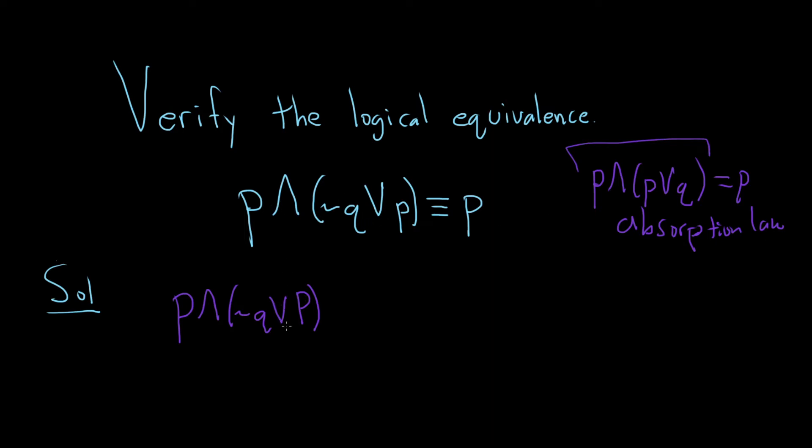So we would be there if we could just switch the P and the not Q. And we can do that using something called the commutative law. So this is P and P or not Q. And this is by the commutative law.